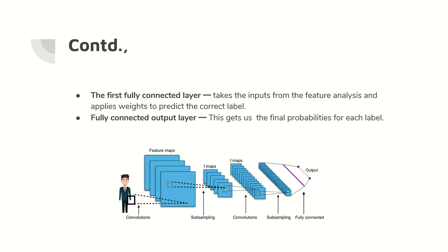Appropriate weights are applied here and this helps in predicting the correct label. Now the final layer is the fully connected output layer — this is where you completely get the output, such as: is it a dog or a cat?